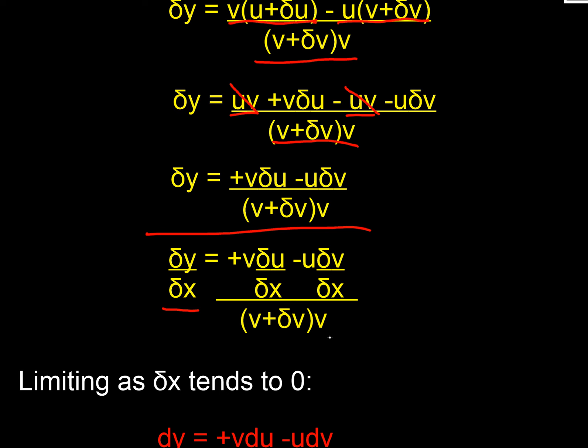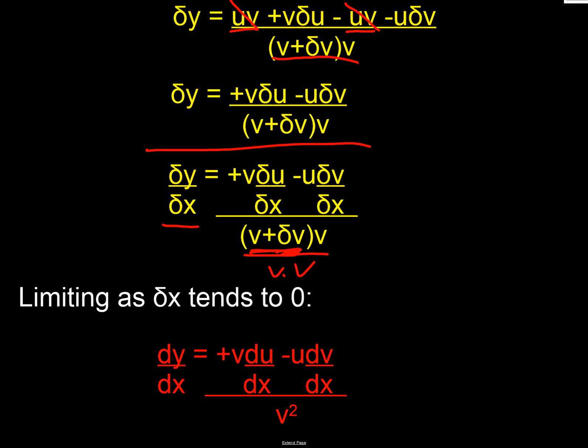If we limit this as δx tends to zero, we know what's going to happen on the top. But let's think about what happens to this bracket. That δv gets smaller and smaller, so we end up with v times v, which is v².